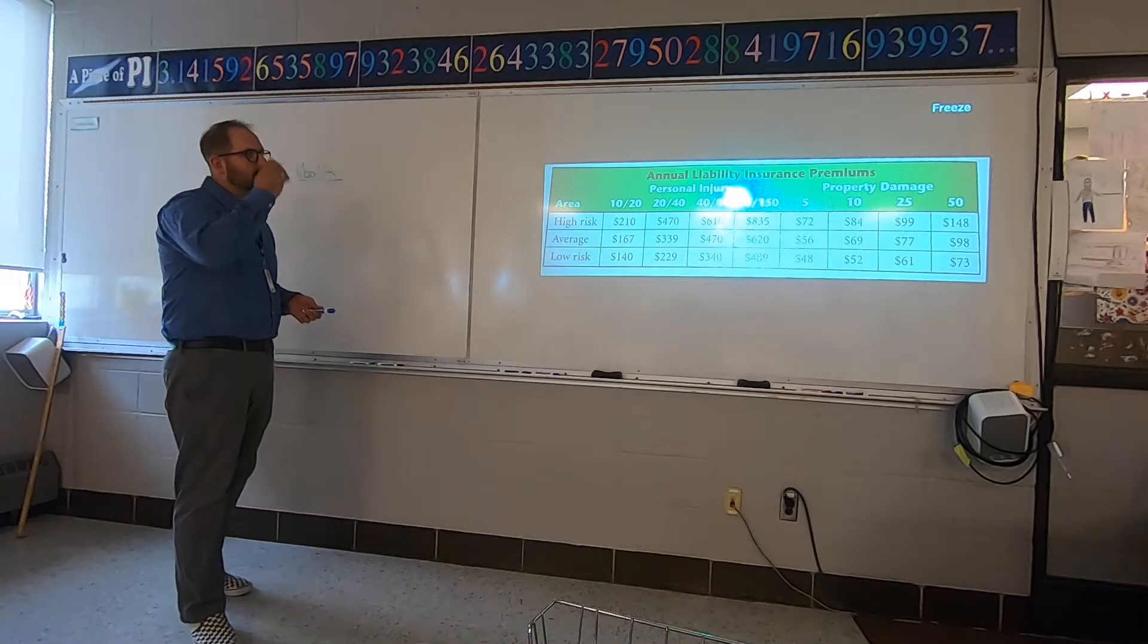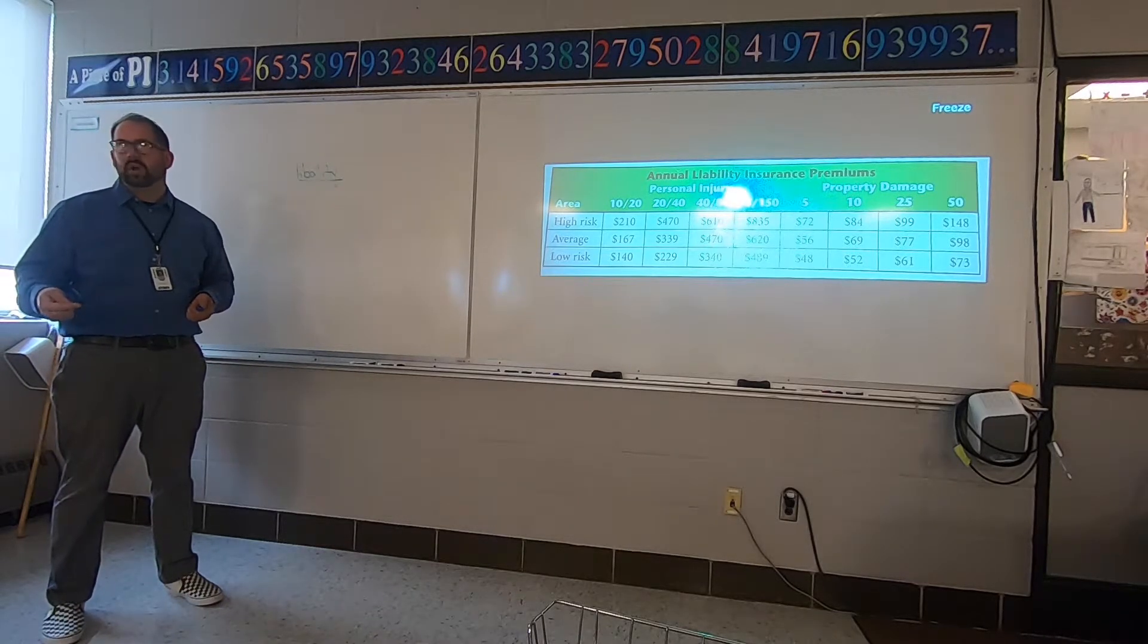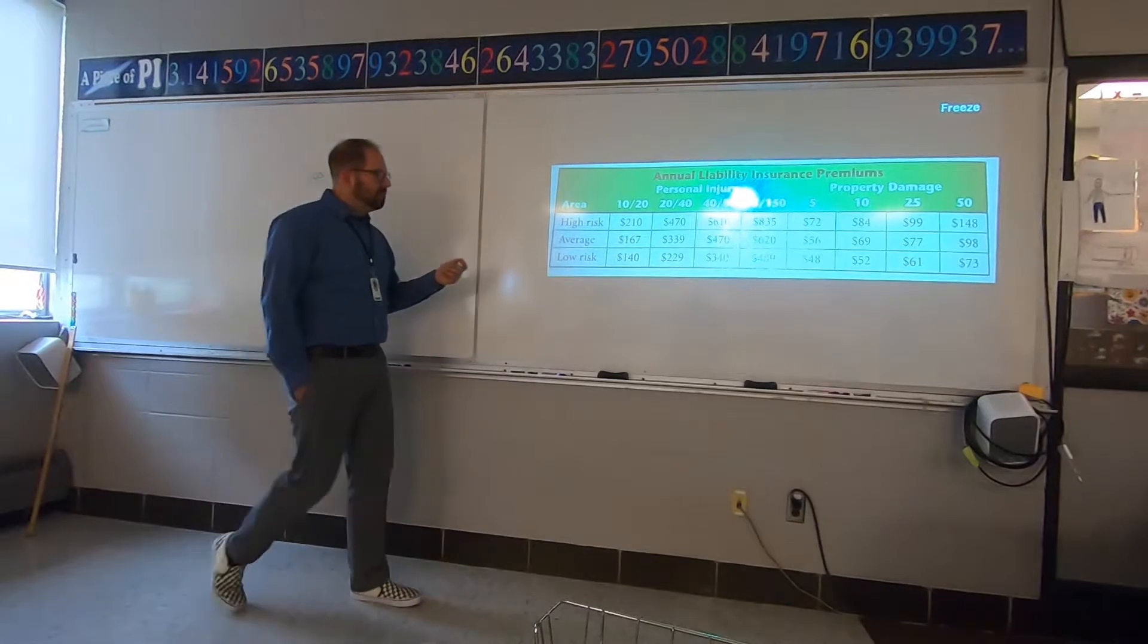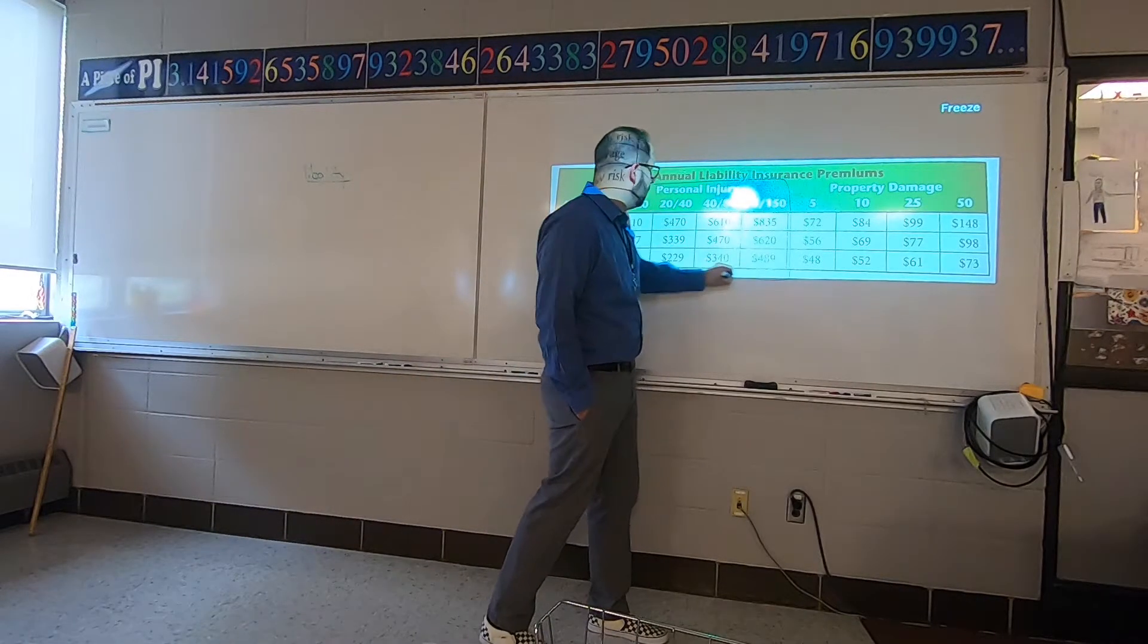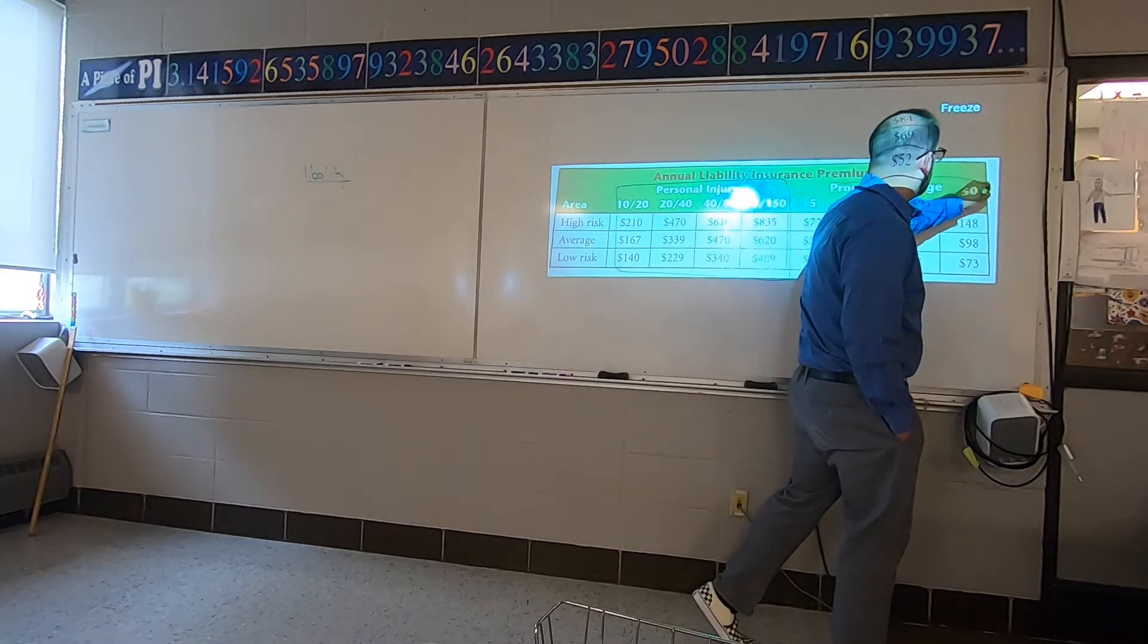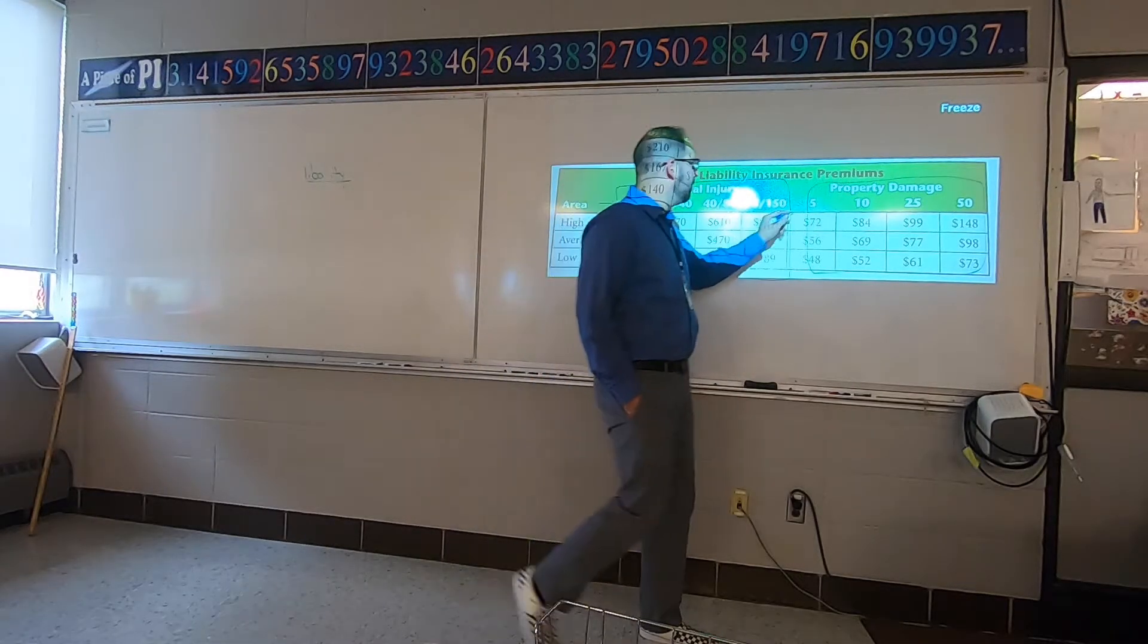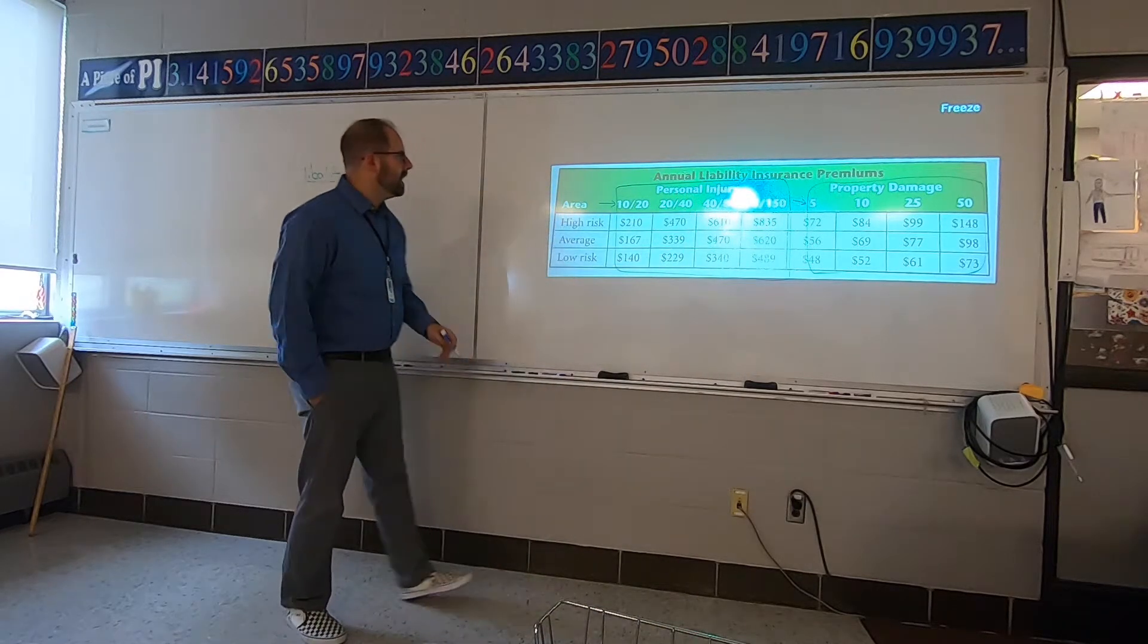It's just covering, if you were liable, it will cover the others that you actually caused harm to. Now let's talk about the actual numbers that are involved here. When you pick one of these, you have to pick one of the personal injury claims, and then you have to pick one of the property numbers. You have to pick one of the top rows. Somebody pick one of these: 10, 20.